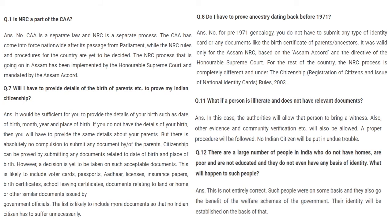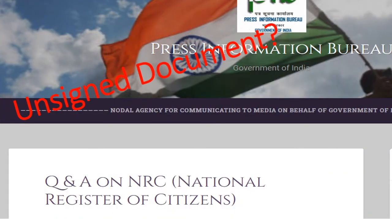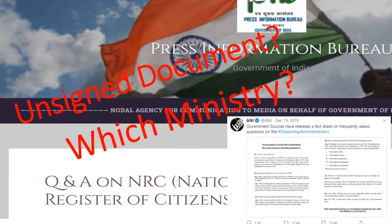It is also stated that citizenship can be proved by submitting any document related to date of birth and place of birth. Acceptable documents are likely to include voter cards, passports, Aadhar card, license, insurance papers, birth certificates, school leaving certificates, and documents relating to land or home or other similar documents issued by government officials. The list is likely to include more documents so that no Indian citizen has to suffer unnecessarily. However, the FAQ source has its own criticism as it is an unsigned document.